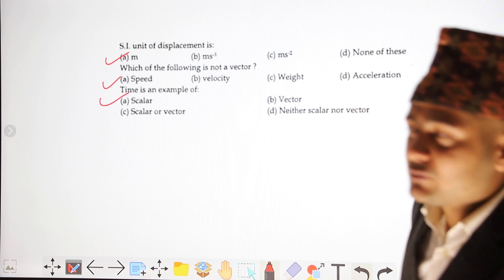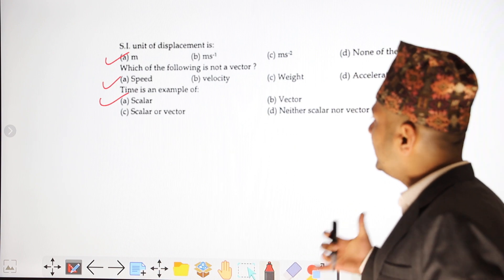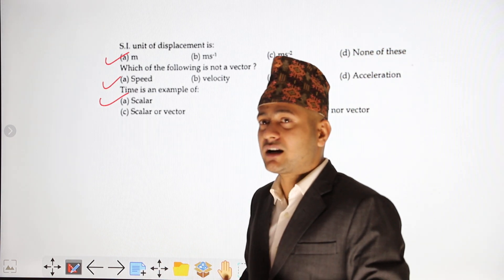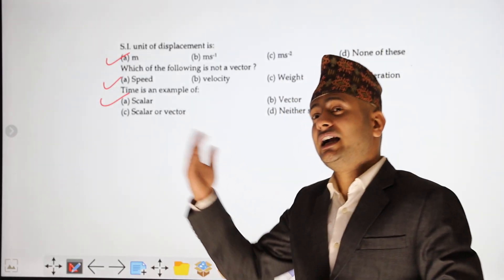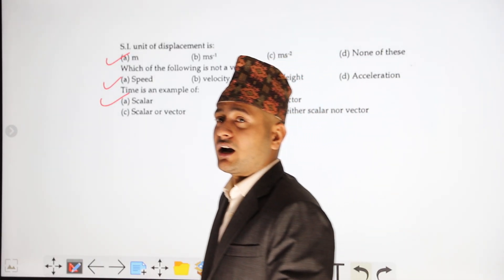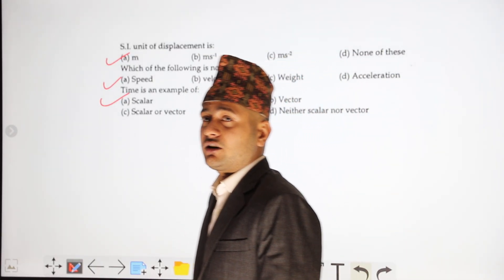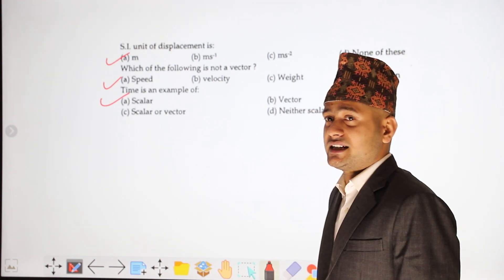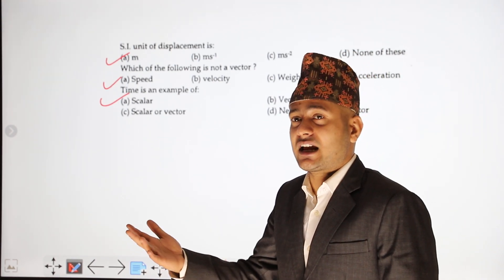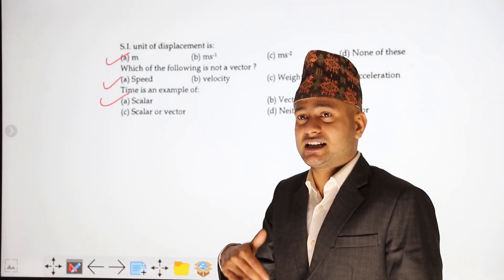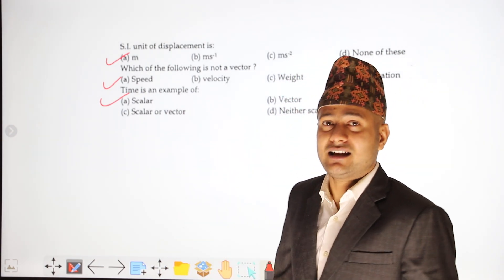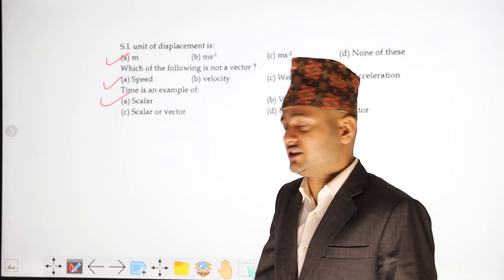Time does not have a certain direction — neither forward nor backward. Time has no specific direction, which means time is a scalar quantity.